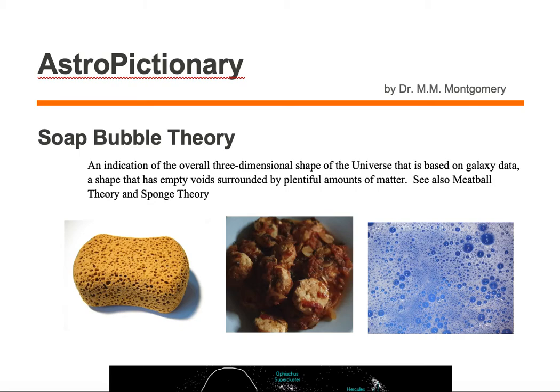Soap bubble theory is an indication of the overall three-dimensional shape of the universe, based on galaxy data — a shape that has empty voids surrounded by plentiful amounts of matter. See also meatball theory and sponge theory.